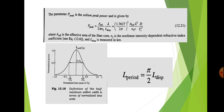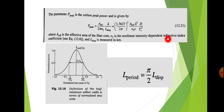The peak power is given by: P_peak = A_eff / (2π · LD · λ) = (1.7627/2π)² · A_eff · λ³ / (n2 · c · D) · (1/ts²), where A_eff is the effective area of the fiber core, n2 is the non-linear intensity dependent refractive index coefficient, and LD is measured in kilometers. The period of the soliton pulse is: L_period = (π/2) · LD.